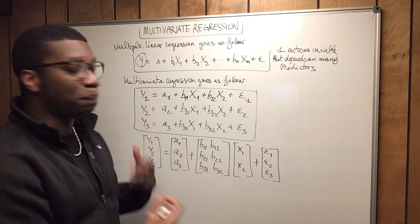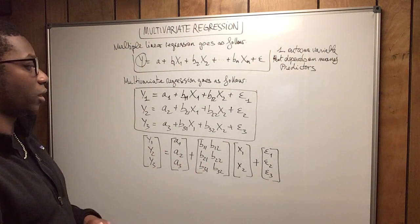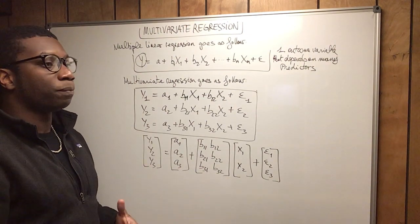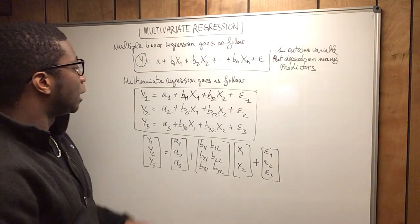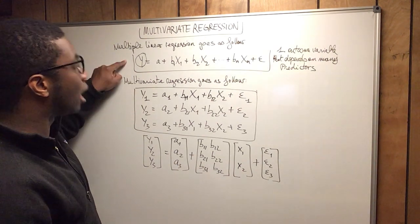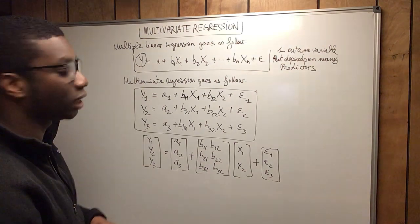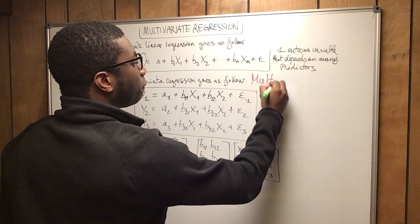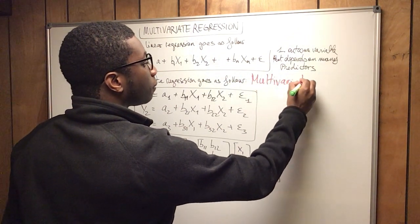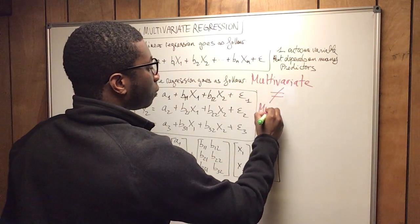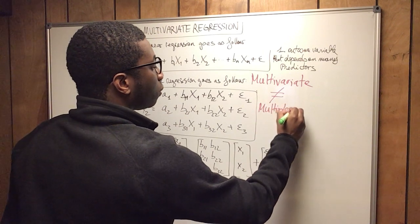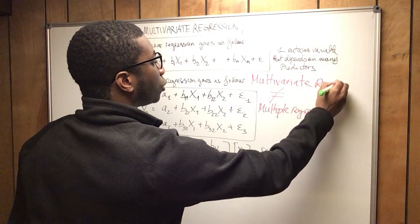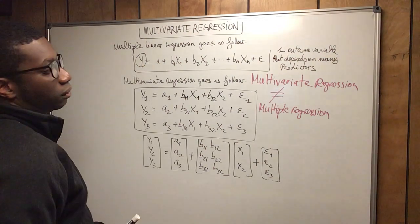I hope you understand a little bit the basics. This is what a multivariate regression is — you have many outcome variables that depend on one predictor or many predictors. But the multivariate regression is not the multiple linear regression. I want that to be clear. Multivariate regression is NOT multiple regression. These two are not the same.